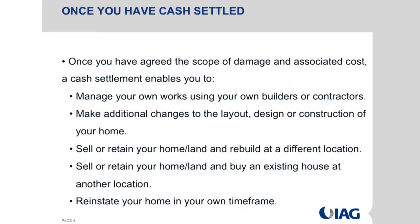Once you've agreed the scope of damage and the associated cost, cash settlements allow you to manage your own project in your own time frame. You've probably heard media comments about insurers' time frames - EQC are down to the last 2% of claims. What a cash settlement means is that you're not tied to those time frames. We have customers who say their son doesn't finish school for another three years and they don't want to rebuild until then. That's fine, but insurers won't be managing repairs and reinstatements in three years' time, so the best way forward is to cash settle now.